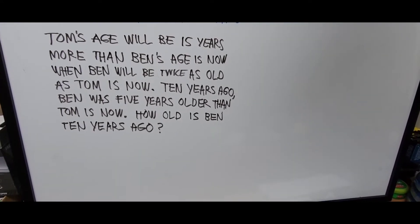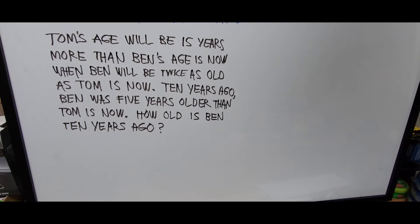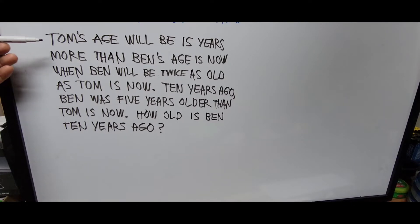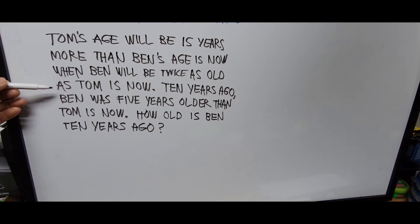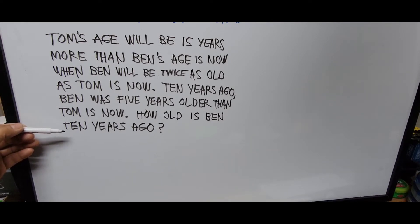The first thing we have to do is identify the variable — the unknown — and formulate equations from the problem sentences. Let's read the problem again: Tom's age will be 15 years more than Ben's age is now, when Ben will be twice as old as Tom is now. 10 years ago, Ben was five years older than Tom is now. How old is Ben 10 years ago?